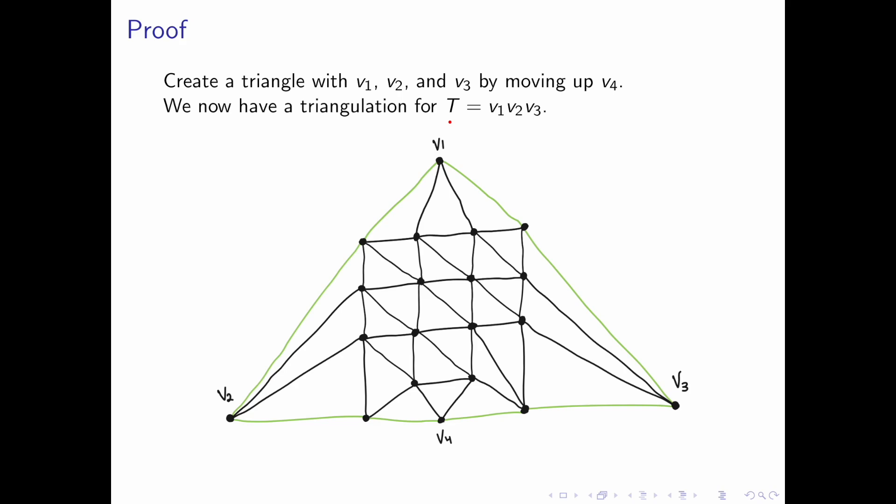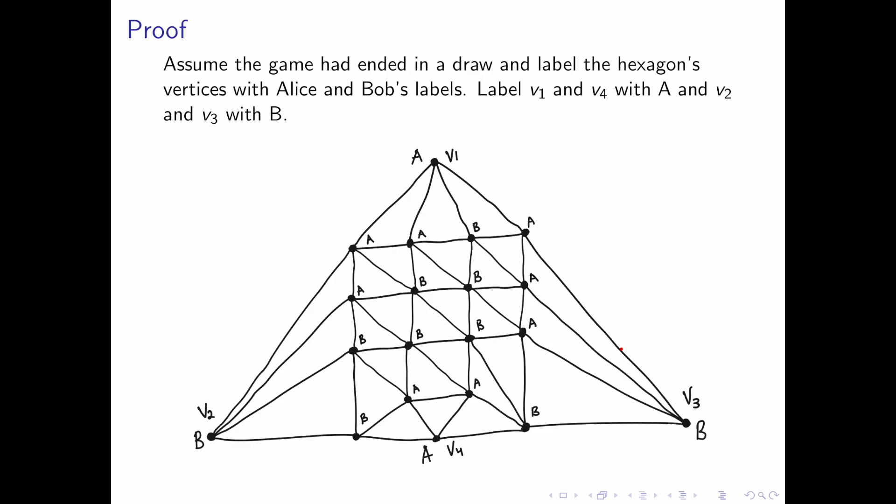We would like to be able to use Sperner's lemma, hence we have a triangulation for T. Later, we will add Sperner coloring to this triangulation and be able to use Sperner's lemma. Before we go there, we will assume that the game had ended in a draw, and we'll label the hexagon's vertices with Alice and Bob's labels, A for Alice and B for Bob.